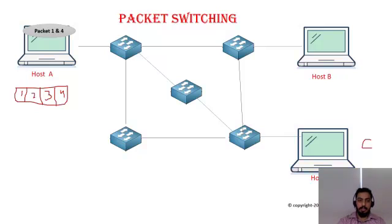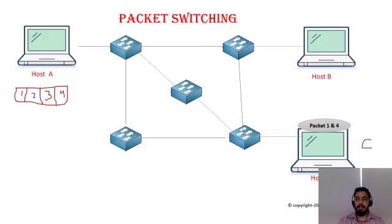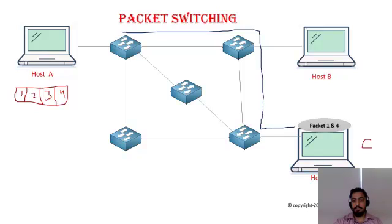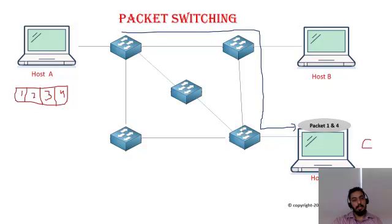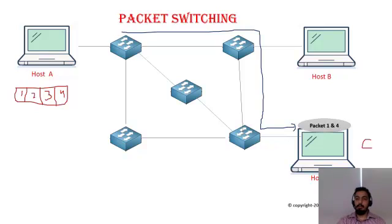Computer A can randomly take packets and transfer them through the switching process. As you can see, packets one and four have taken the upper part of the network topology via one route and reached the destination. An important point about packet switching is that it is not mandatory to send all chunks using the same path — they can traverse different paths.